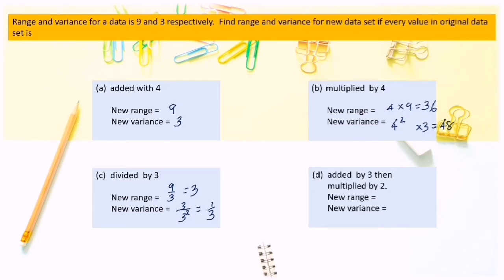If every value in the original data set is added by 3 then multiplied by 2, the new range: since adding 3 does not change the range, the new range is 2 times the original range, so 2 times 9 equals 18. And new variance is 2 squared times 3 equals 12.